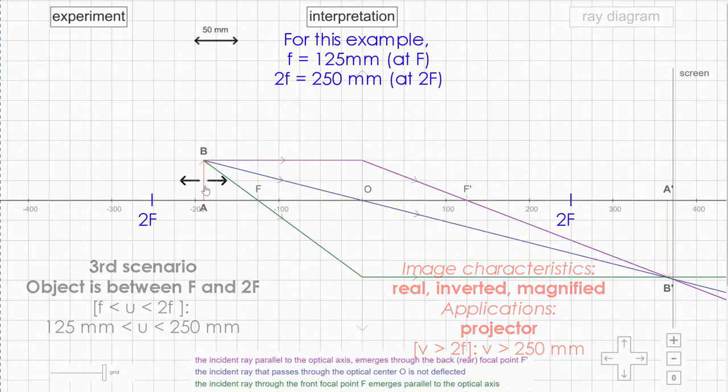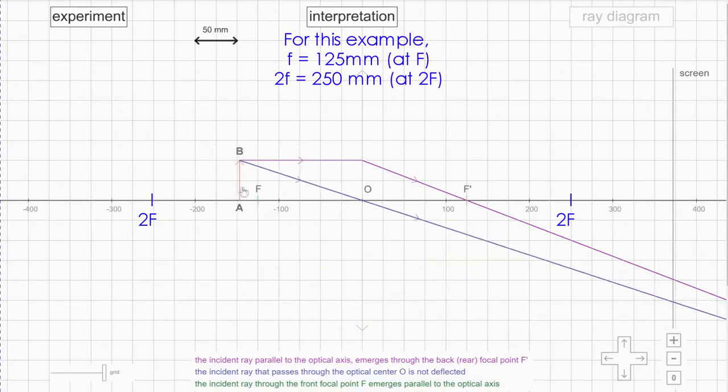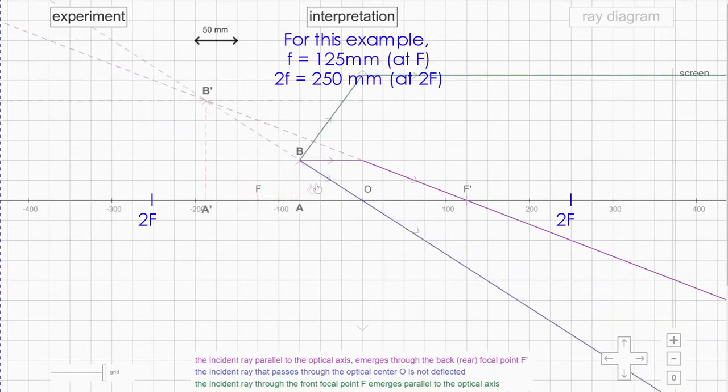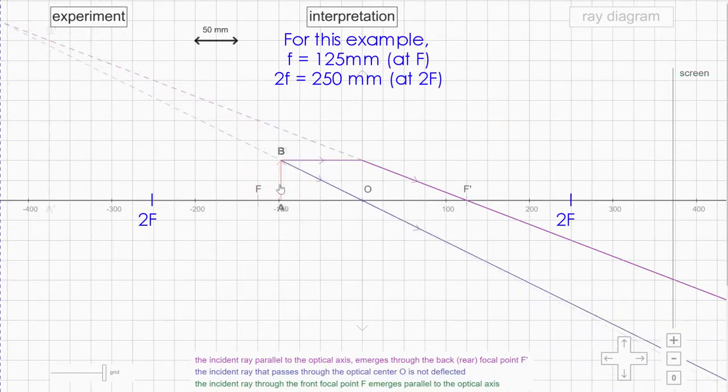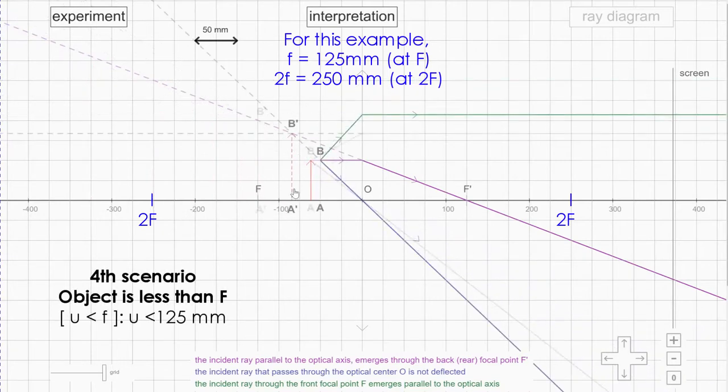And the last one - if I continue to shift the object nearer, and of course at f it will be parallel. But the fourth scenario is referring to when the object is less than one focal length, so it's within here.